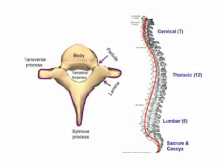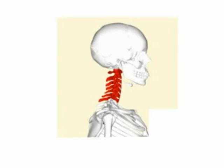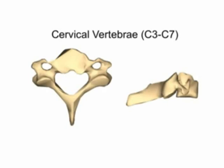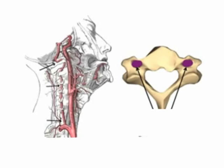The cervical region consists of 7 vertebrae, abbreviated as C1 to C7 starting from above. C3 to C7 have common features: the spinous process is short, the vertebral foramen is triangular in shape, and a defining feature of the cervical vertebrae is the transverse foramen, which is a hole within the transverse process. We can also see the superior articular facets; the inferior ones can be seen on the lateral view. The transverse foramen is the passage for the vertebral artery, which is one of the main arteries that supplies the brain.